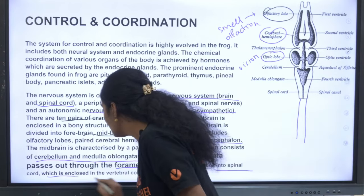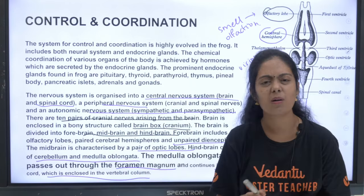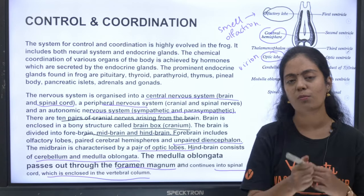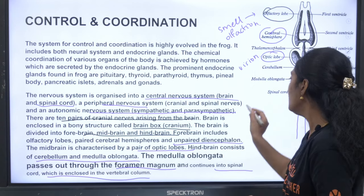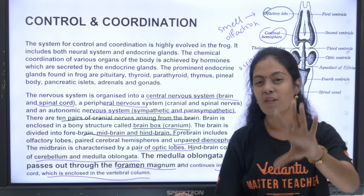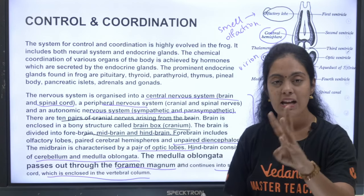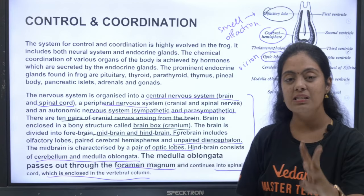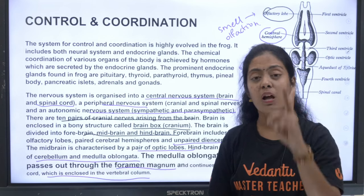The brain is divided into forebrain, midbrain, and hindbrain. The forebrain includes olfactory lobes (associated with smell), paired cerebral hemispheres, and an unpaired diencephalon. The midbrain is characterized by a pair of optic lobes that help in vision. The hindbrain consists of the cerebellum and medulla oblongata. The medulla oblongata passes through the foramen magnum and continues into the spinal cord, which is enclosed in the vertebral column.